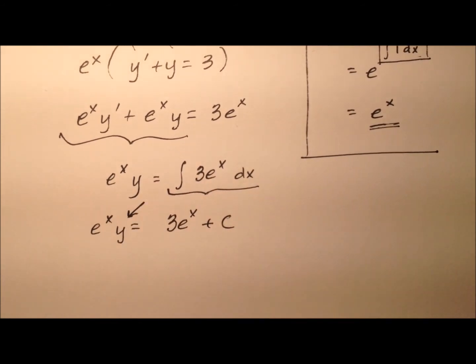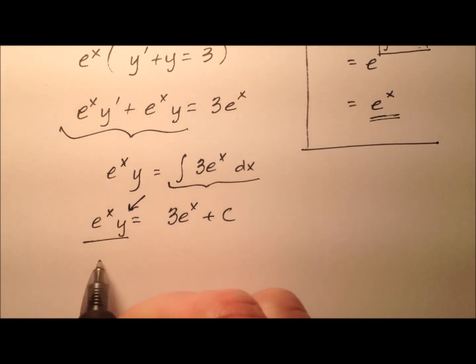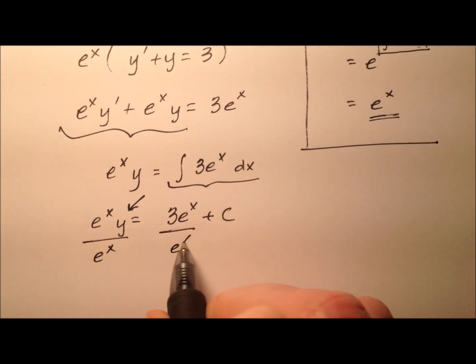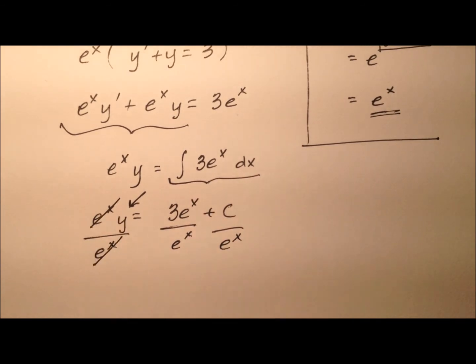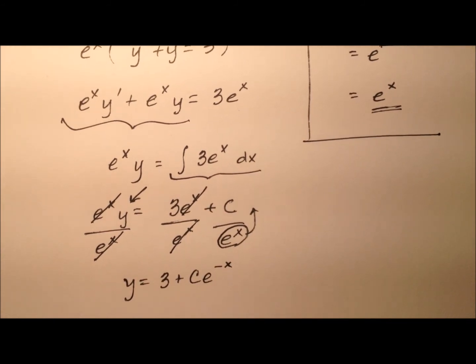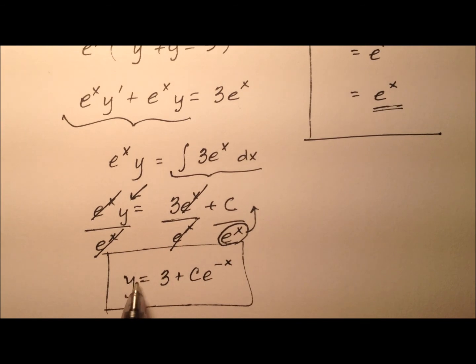To solve for y now I'm going to divide every term by e to the x. When I do that, the e to the x cancels here and here. So I'm left with y equals 3 plus c divided by e to the x. I'm going to bring this up and make this c times e to the negative x. This is my solution: y equals 3 plus ce to the negative x.